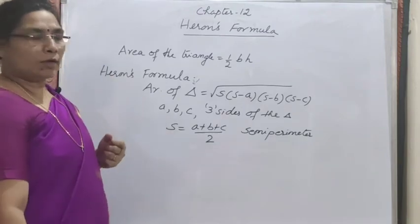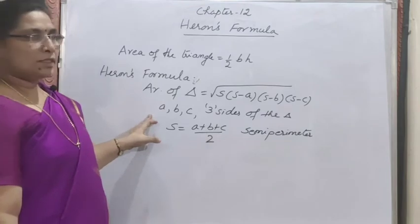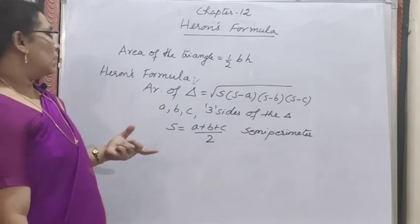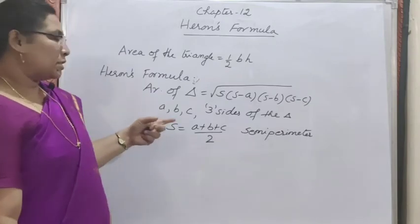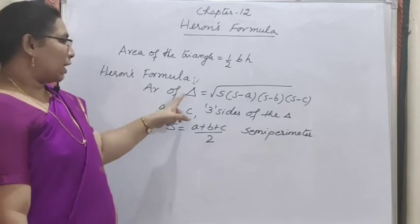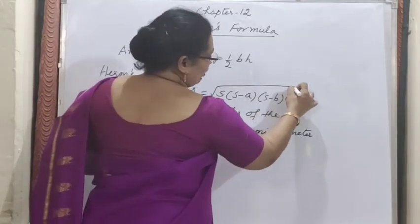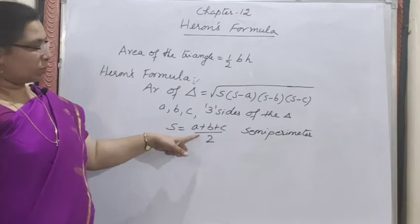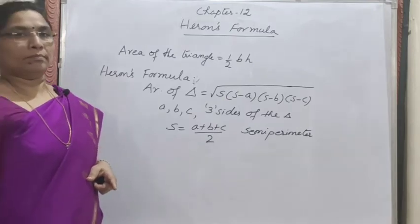So the area of the triangle can be calculated based on the three sides using Heron's formula. The difference from the normal formula is that here we don't need the base and perpendicular height — only the three sides. Some of you may know this formula from Olympiad questions, but it is included in the 9th class syllabus. S is also called the semi-perimeter.